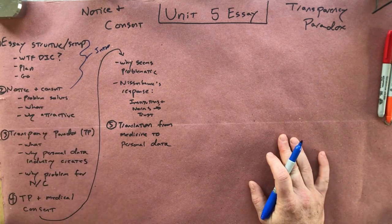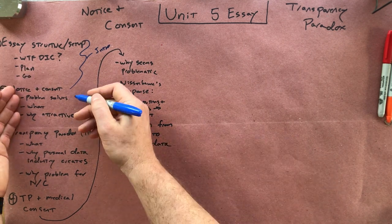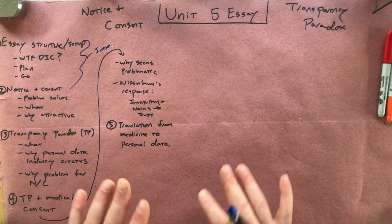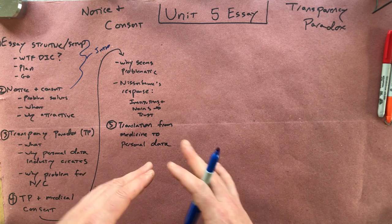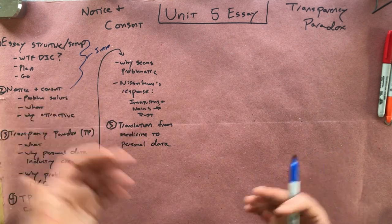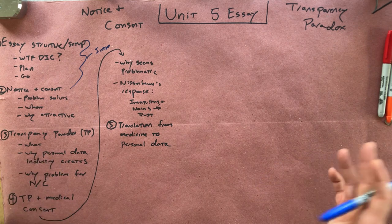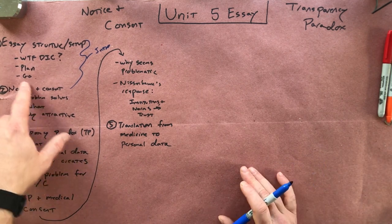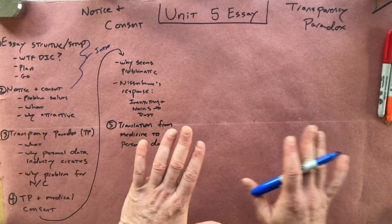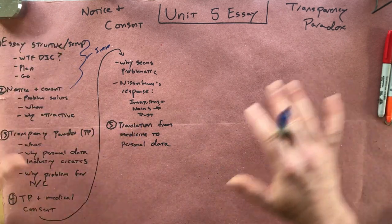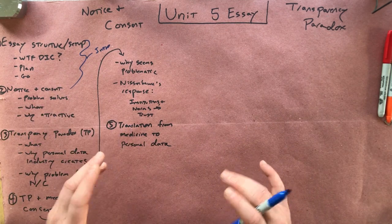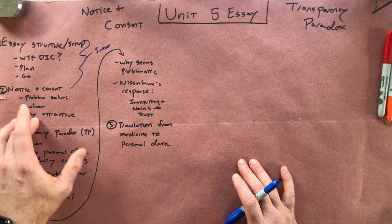So — the notice and consent model. The first thing you want to say is what problem is this solving. You don't have to be terribly detailed, but you want to go into a little bit just so the reader understands that we're talking about a way of approaching how a company can get the right to do stuff with people's personal data. You want to say sort of what it is: we notify you and you consent to it. And you want to say here's why we care about it.